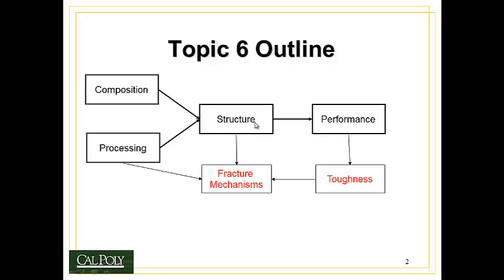Throughout this topic, we're going to be looking at two key components. One is fracture mechanisms — how things break — which is dependent on how we make them and also their structure. And then, in terms of performance, we'll look at a new property called toughness. Toughness is the ability of a material to resist damage, and is similar to strength, but not quite the same concept.